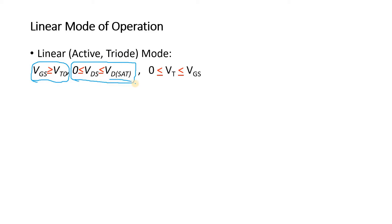Saturation voltage is the point where, irrespective of increase in input, there is no increase in output. The maximum voltage your device can provide at the output is equivalent to your power supply, which we call VDD. So if your output voltage is in this range and your VGS is greater than VT, then we say your device is actually in linear mode.